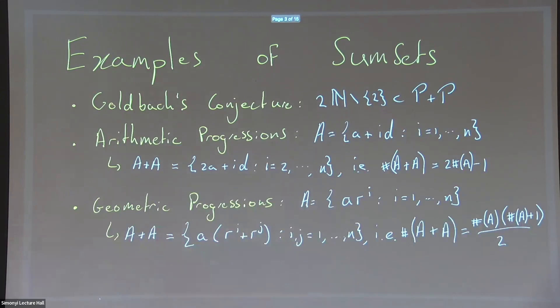Let's see some examples of where sum sets appear. The famous Goldbach conjecture can be stated as: the sum set of the primes with itself covers all even numbers except for two. Consider two examples: if I take an arithmetic progression with common difference d, the sum set with itself is another arithmetic progression with common difference d, about twice as long.